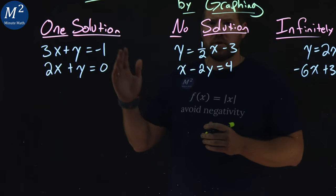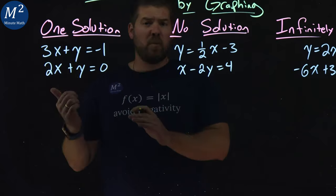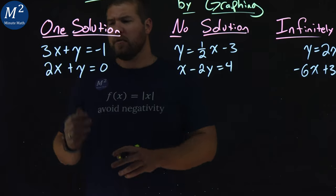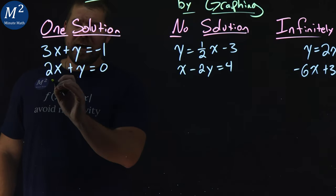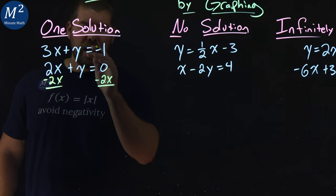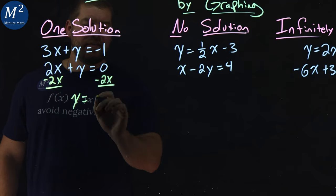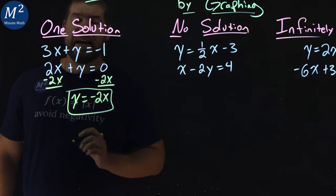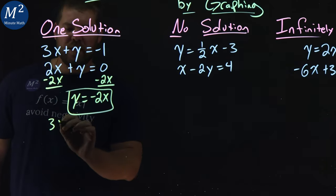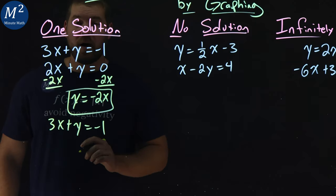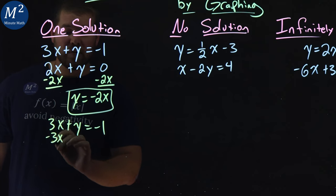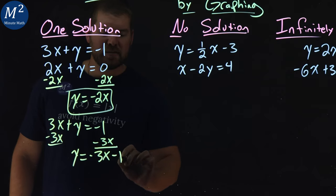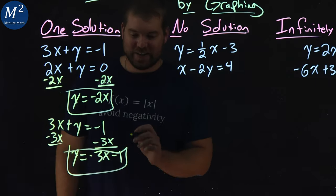Let's start with our first one: one solution. We want to write both of our equations in y equals mx plus b form. Let's start with the second equation — all I have to do is subtract 2x from both sides. That gives us y equals negative 2x. For the first equation, 3x plus y equals negative 1, I subtract 3x from both sides and get y equals negative 3x minus 1.